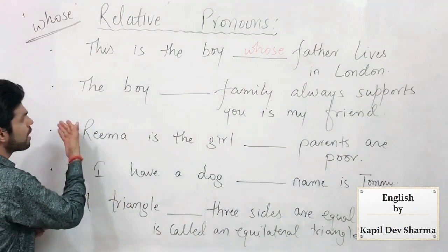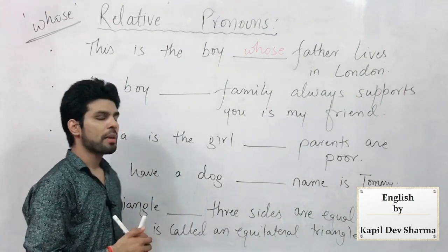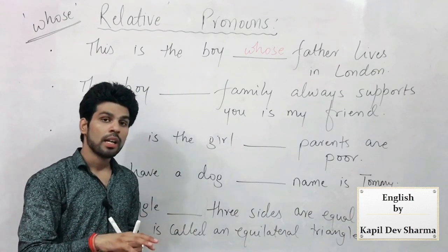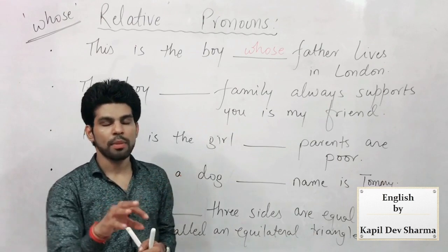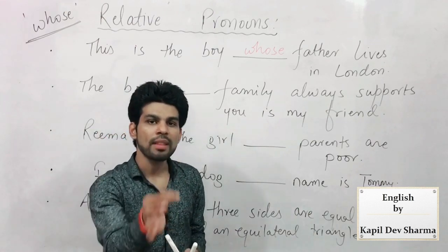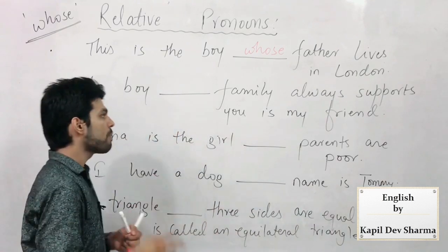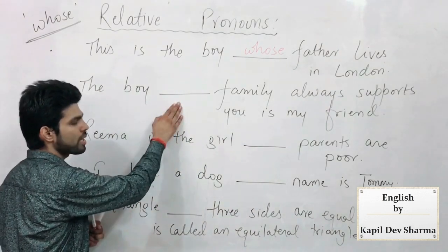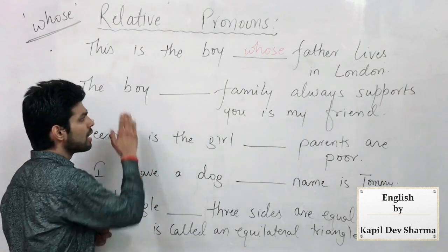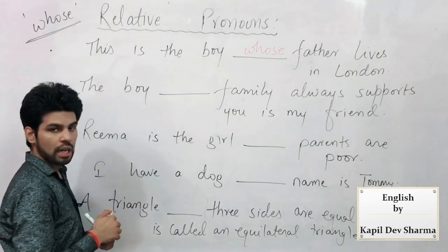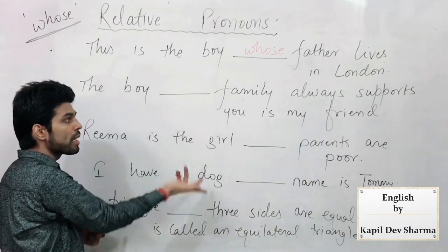Similarly: 'The boy ___ family always supports you is my friend.' 'Voh ladka jiske maa-baap' — 'jiska parivaar aapki hamesha madad karta hai mera dost hai.' So in this case again — 'the boy' is not a subject, and if I write 'who' then 'the boy who family' — no. 'The boy whom family' — no. 'The boy which...' — I cannot write that either.